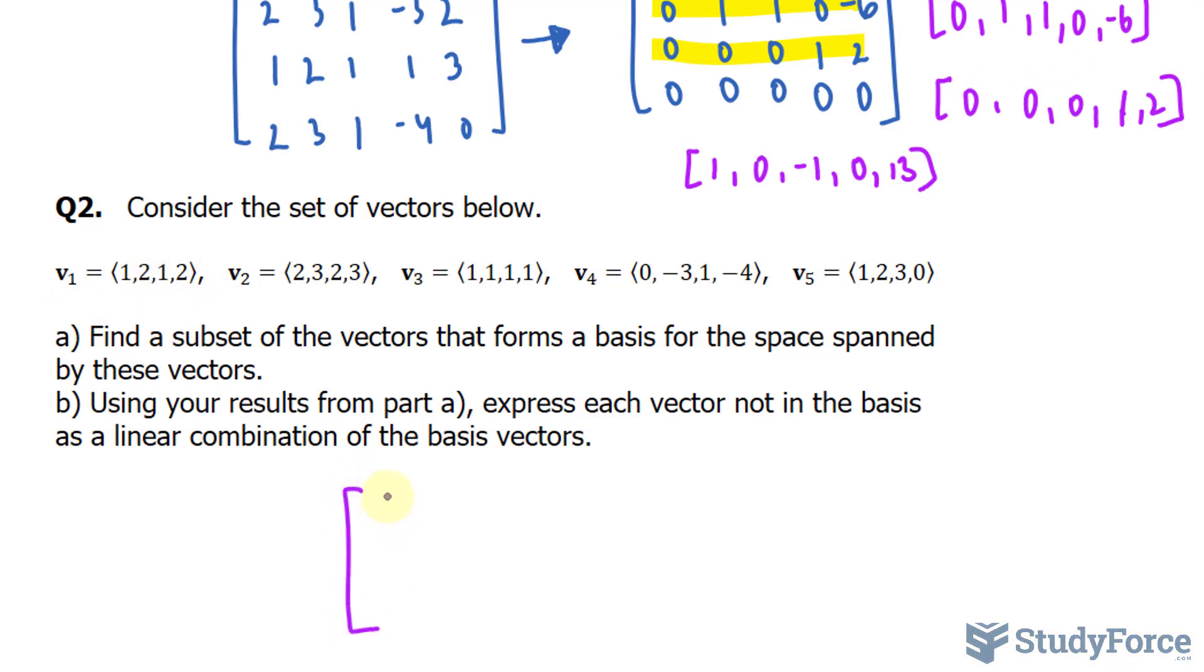Our matrix should look like this. 1, 2, 1, 2. 2, 3, 2, 3. 1, 1, 1, 1. This one is 0, negative 3, 1, negative 4. And lastly, 1, 2, 3, and 0.